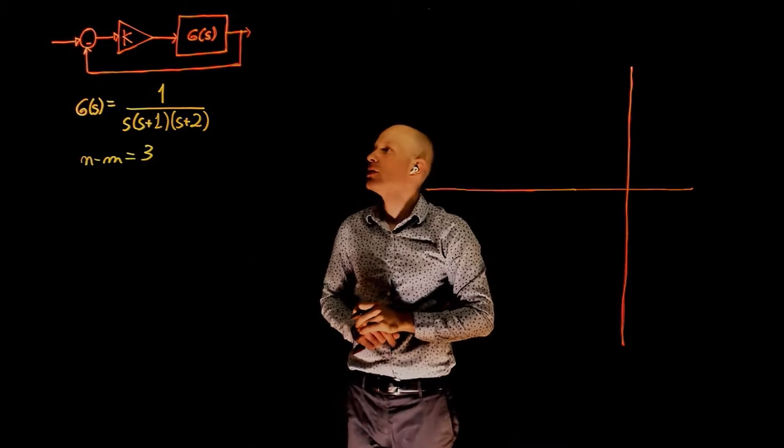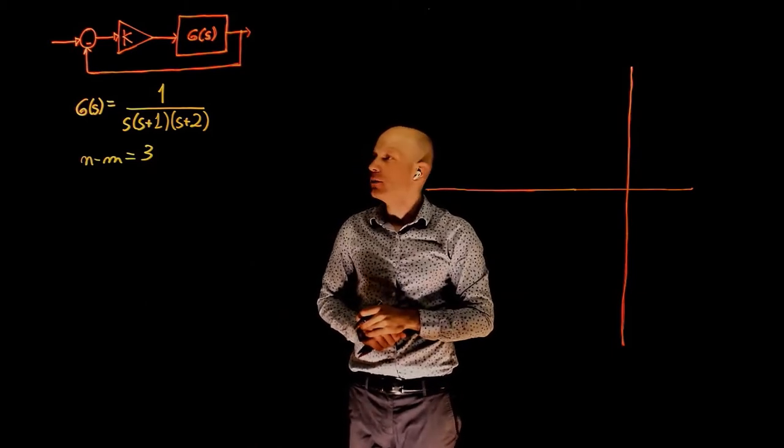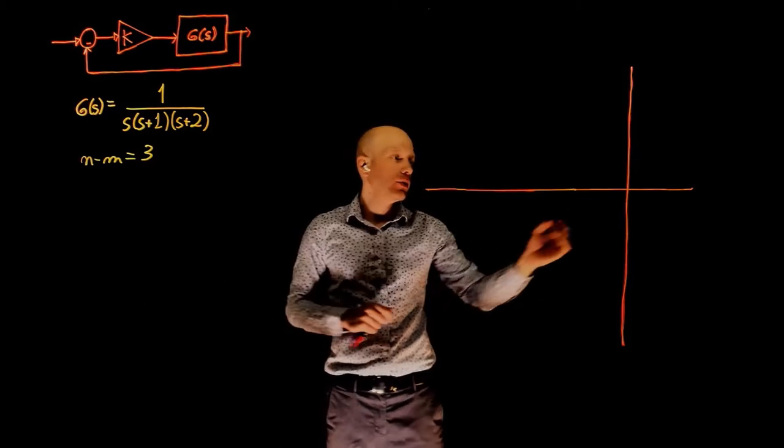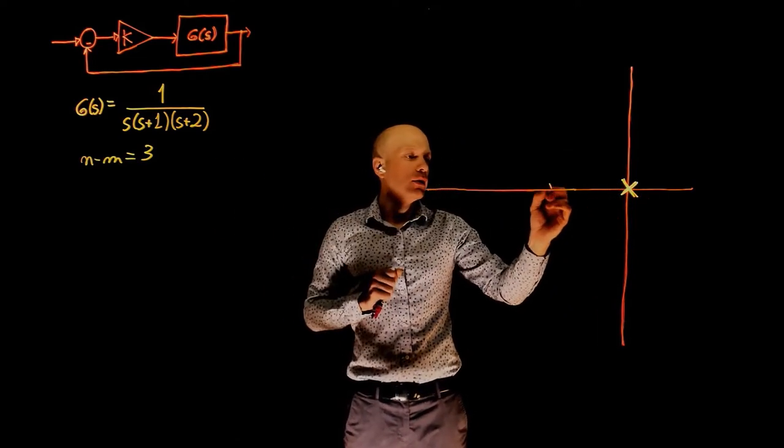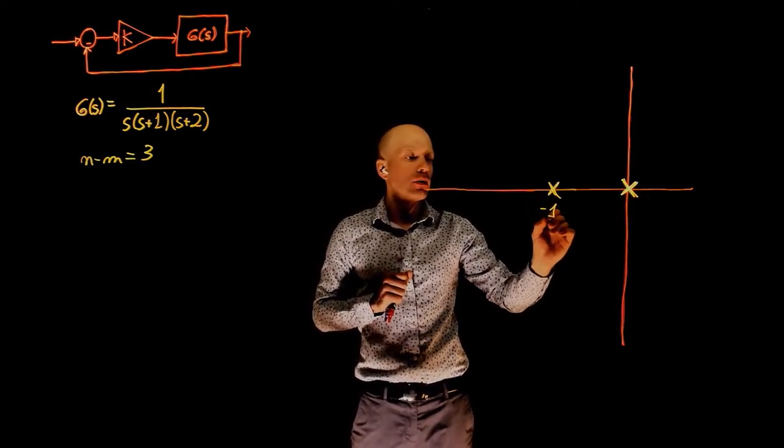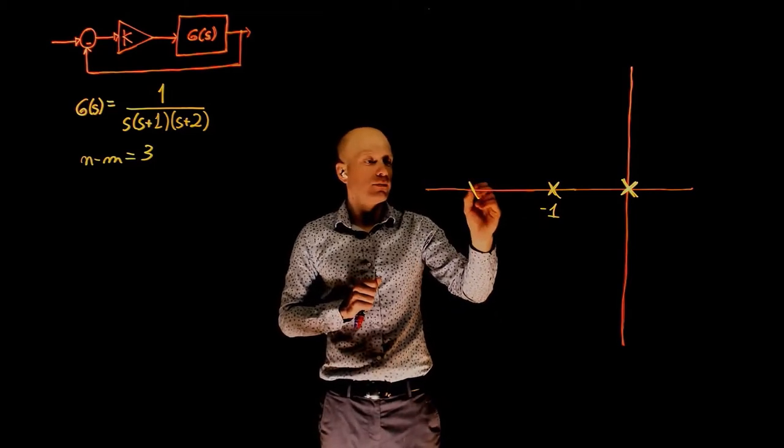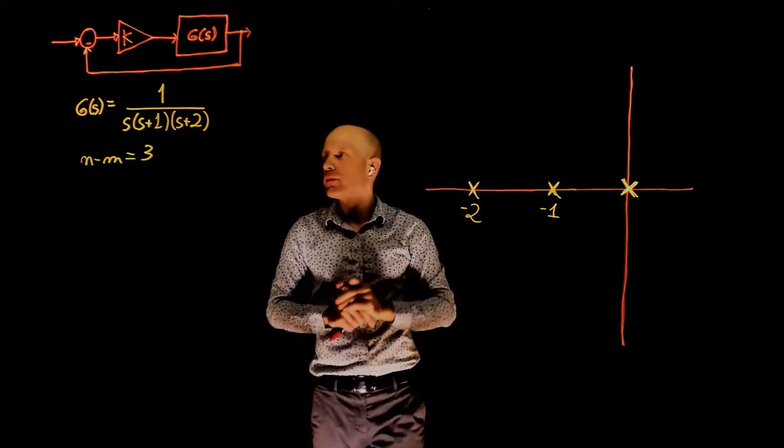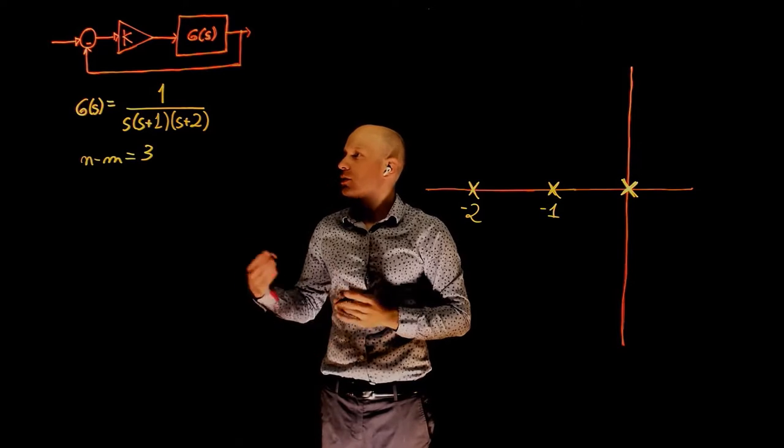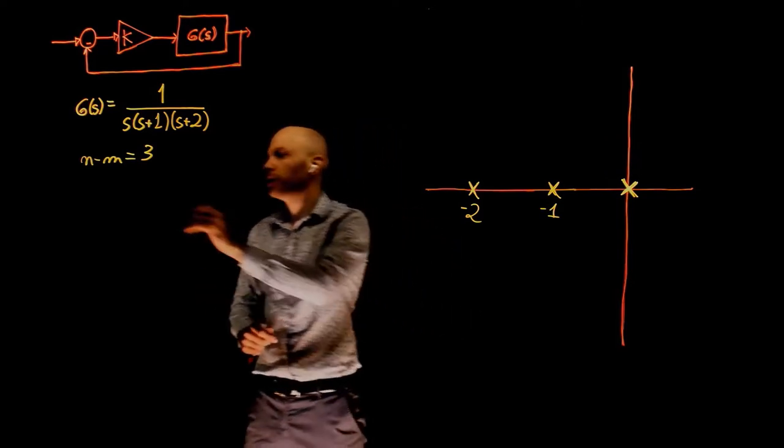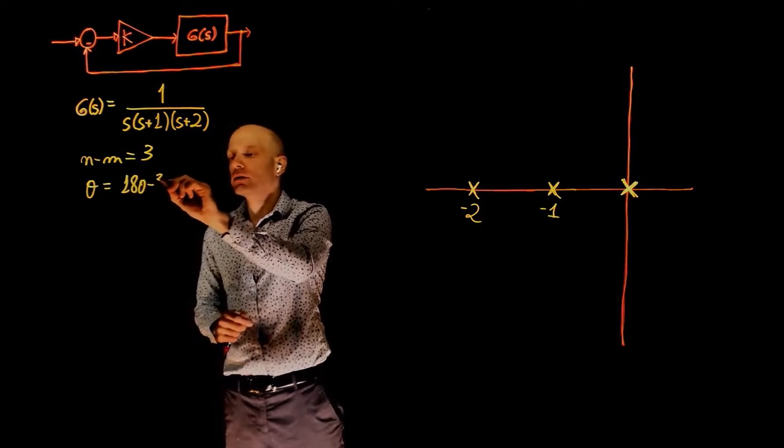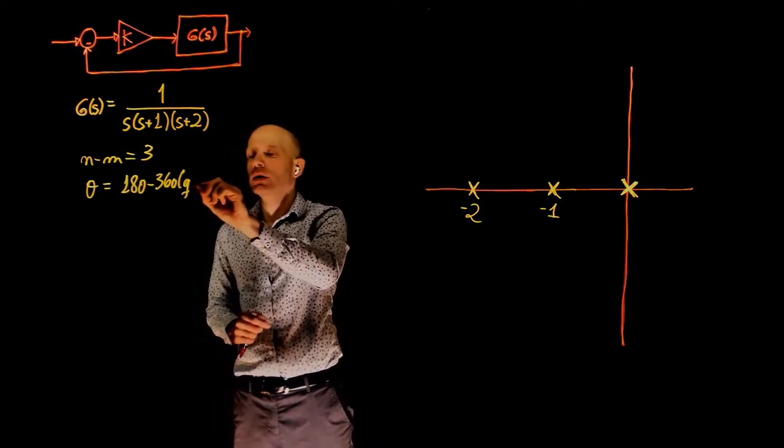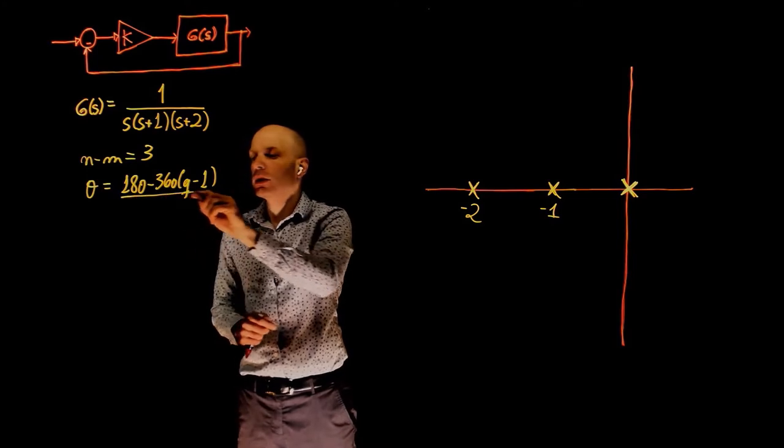This gives us an excess of three poles that will have to go to infinity. The poles are 0, negative 1, and negative 2. These poles will go to infinity following asymptotes that we can determine using the same formula again, 180 minus 360 times q minus 1 divided by n minus m.